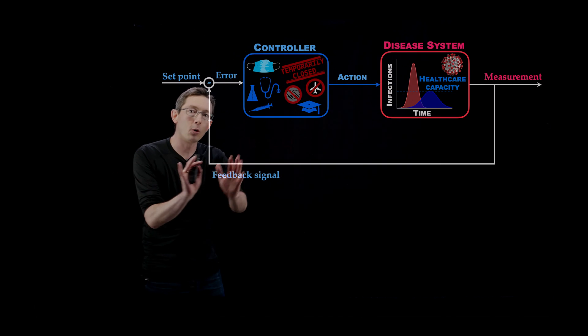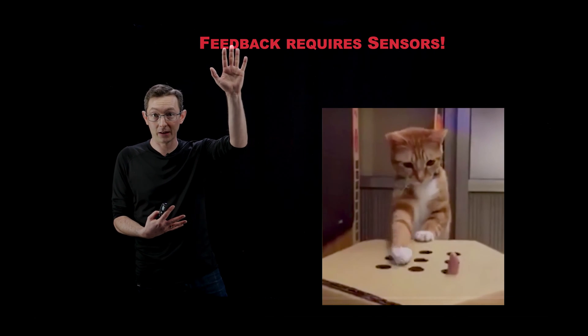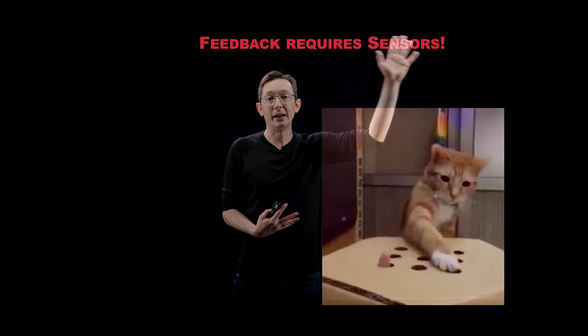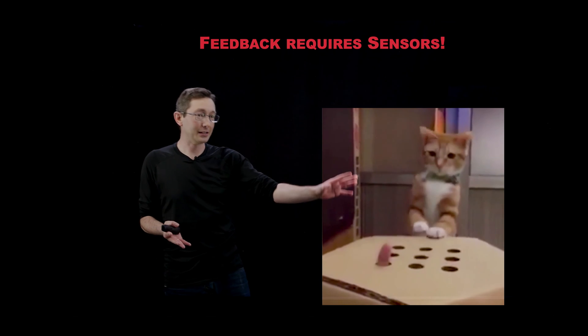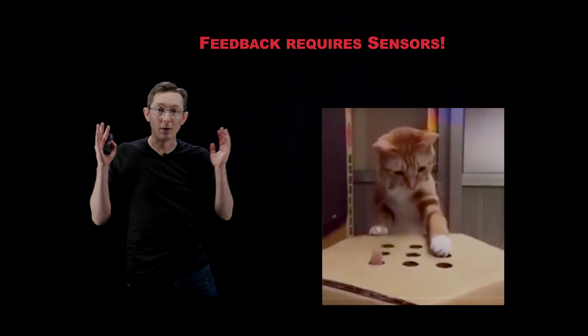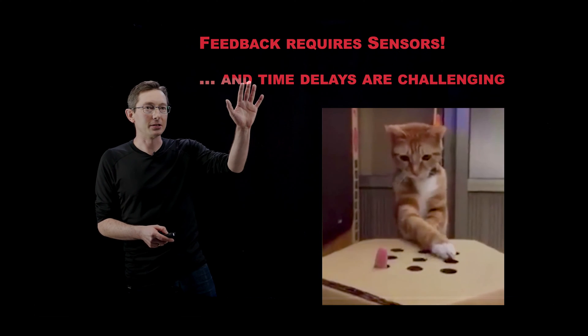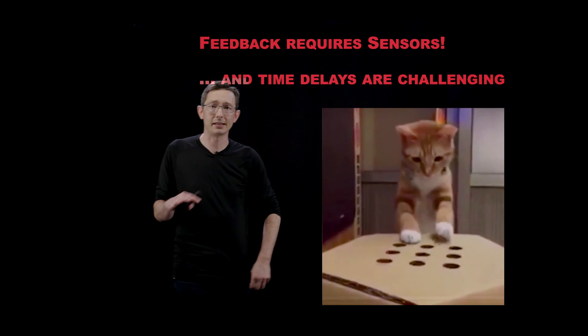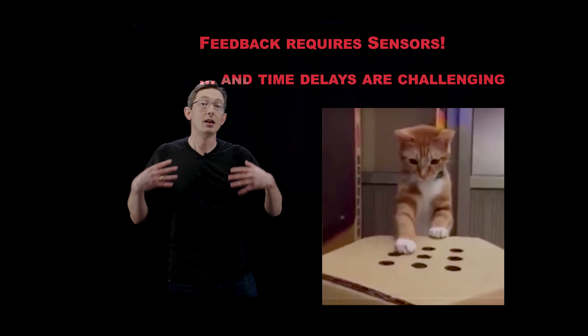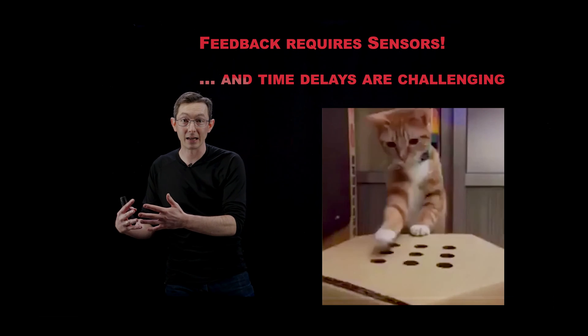Now I'm gonna talk about some of the morals of what we've learned throughout this process. One of the key takeaways is that effective feedback control absolutely relies on sensors. Sensor measurements are the lifeblood of feedback control and you can't do it without measurements. You can't suppress the system if you had a blindfold on, or at least it's much harder. And also time delays are really problematic. So reducing time delays anywhere possible is essential. We maybe can't control the incubation time of the virus, so we should be focusing on getting faster, more real-time sensor measurements and real-time control actions.